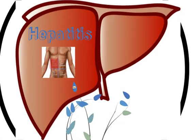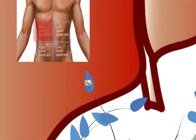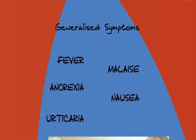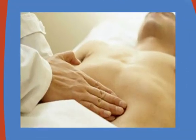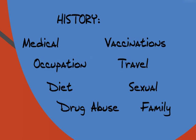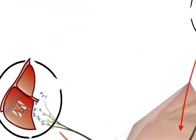Pain in the right upper quadrant with or without jaundice could be a sign of hepatitis. However, hepatitis usually presents more generally with fever, malaise, anorexia, nausea, arthralgia and urticaria. On examination, hepatomegaly, splenomegaly and lymphadenopathy may be found. If hepatitis is suspected, a full history must be taken covering medical history, occupation, travel, dietary history, sexual activity, drug abuse, family history, and if they have had vaccinations against hepatitis. The diagnosis can be confirmed by viral serology.